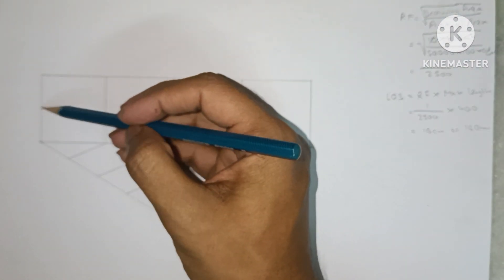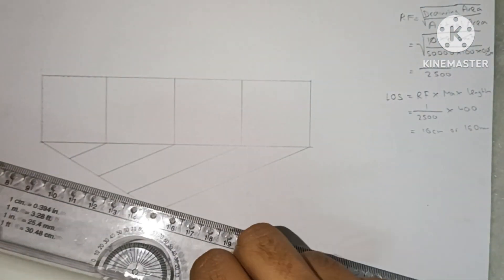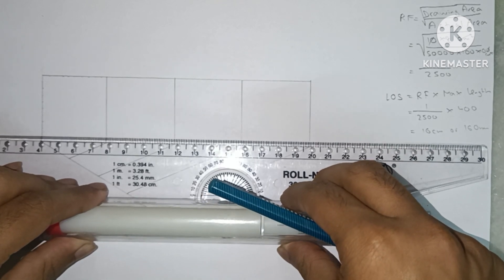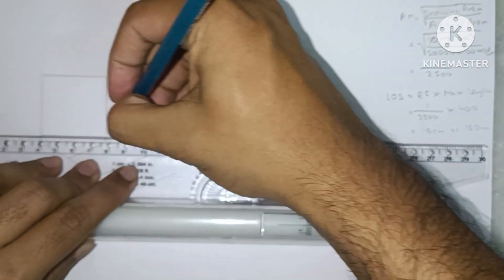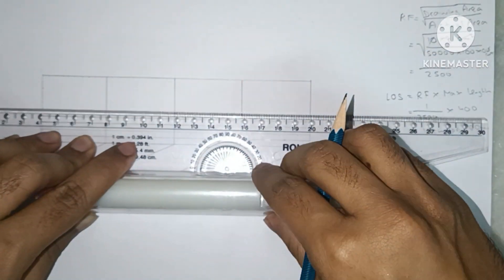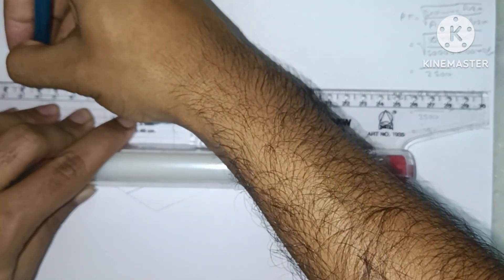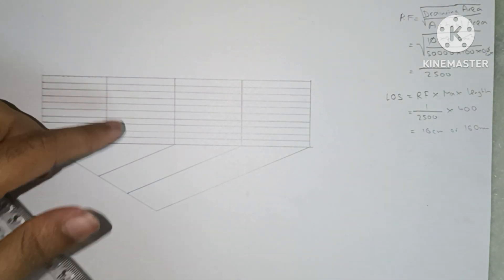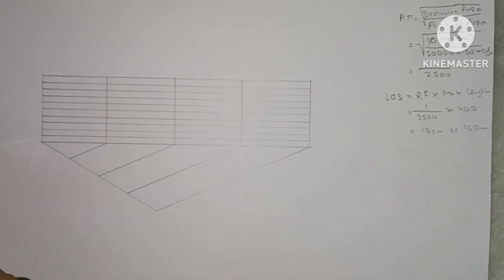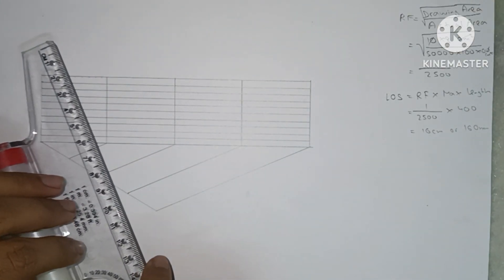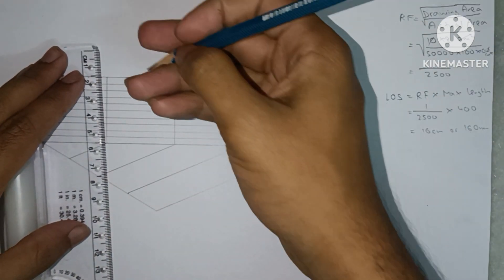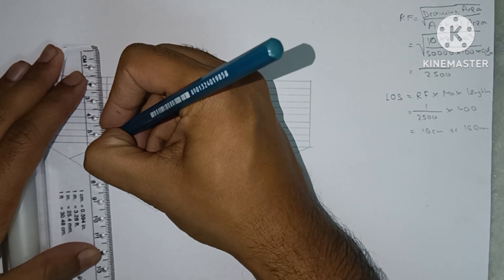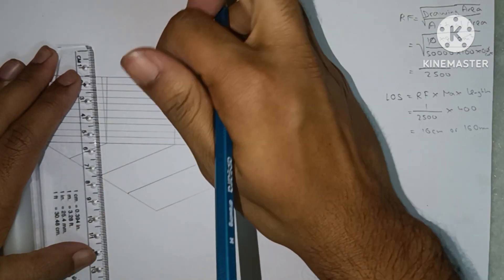I mark 10 points on the top edge and 10 points on the bottom edge, all 4 millimeters apart. Then I join all these points with the roller to make parallel horizontal lines. From the top-left corner point I join diagonal lines to the corresponding 4-millimeter points on the opposite edge, and use the ruler to mark parallel diagonal lines throughout the scale.